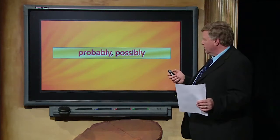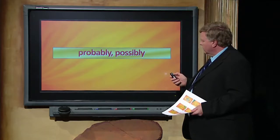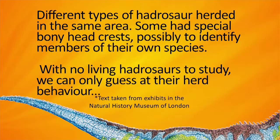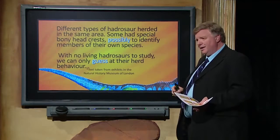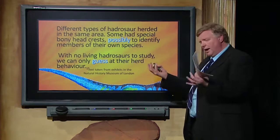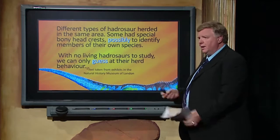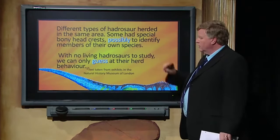Here's a display about hadrosaurs. It says: 'Different types of hadrosaurs herded in the same area. Some had special bony crests, possibly to identify members of their own species.' Do you see what's being done? Ask children what the bony crests were for, and they'll say they were there so the animals could be identified. But the display doesn't say that — all they have are the bones. They are making up a story and then getting out of it by using the word 'possibly.'